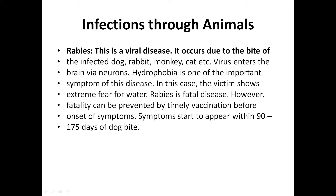First of all, Rabies. Rabies is a viral disease. It occurs due to the bite of an infected dog, rabbit, monkey, cat, etc. The virus enters the brain via neurons.